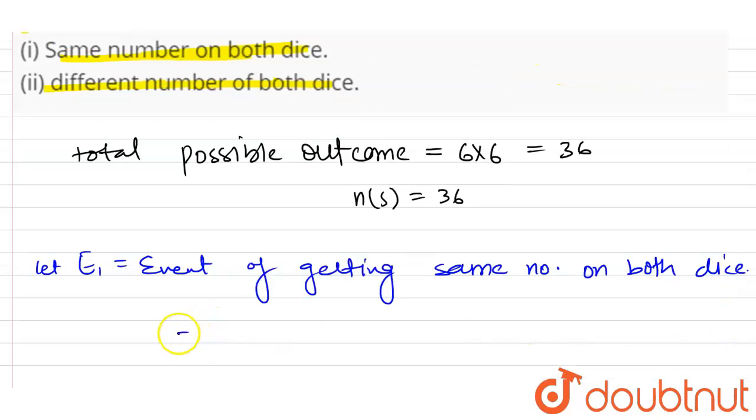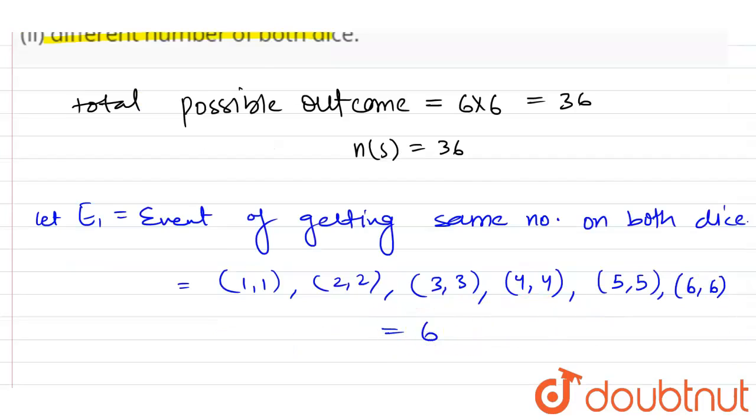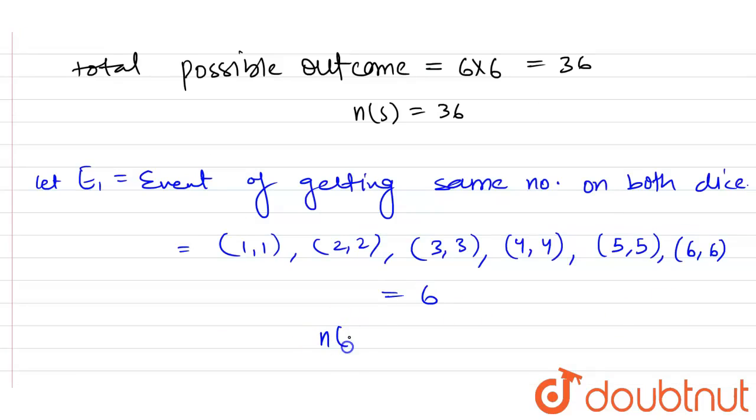So the possibilities are (1,1), (2,2), (3,3), (4,4), (5,5), (6,6). So the total possibility is 6. So n(E1) equals 6.